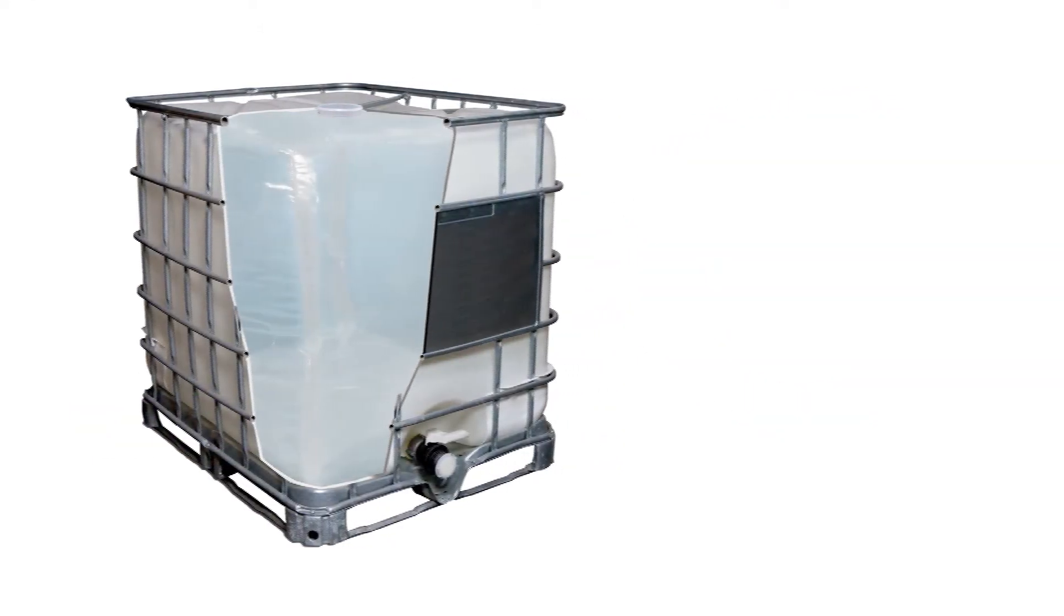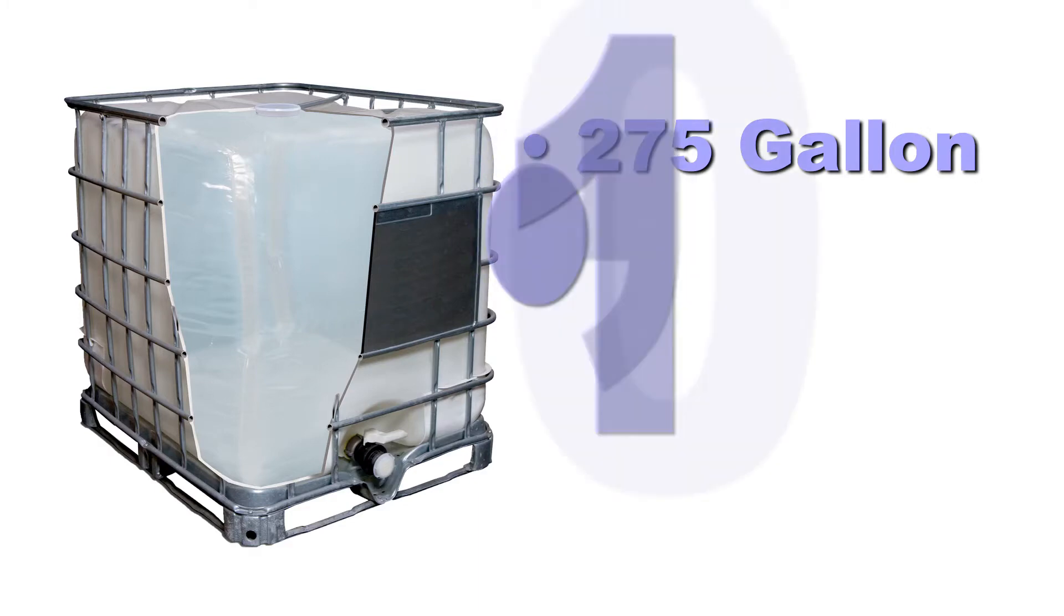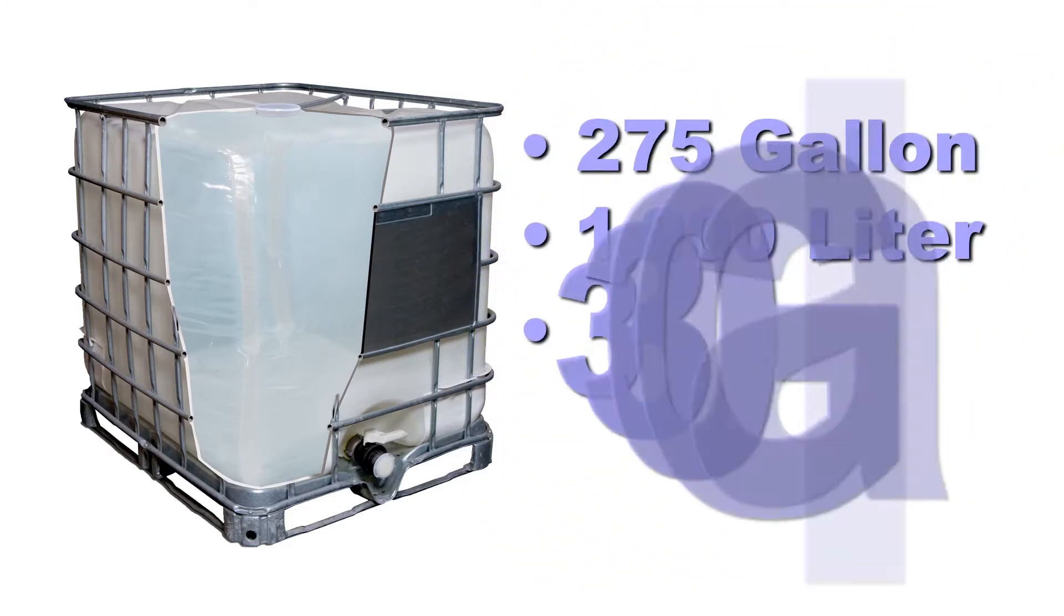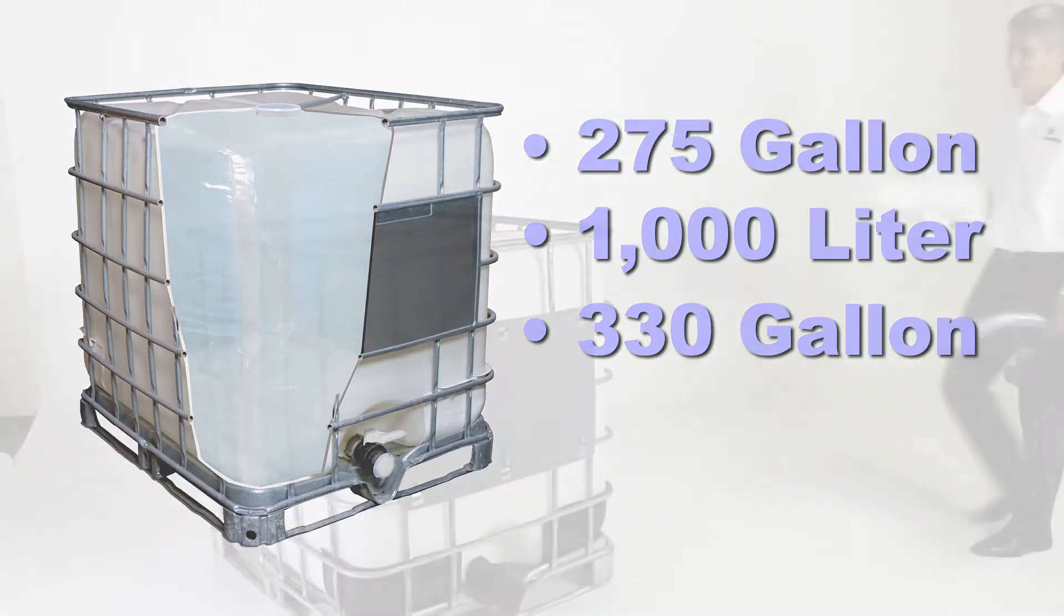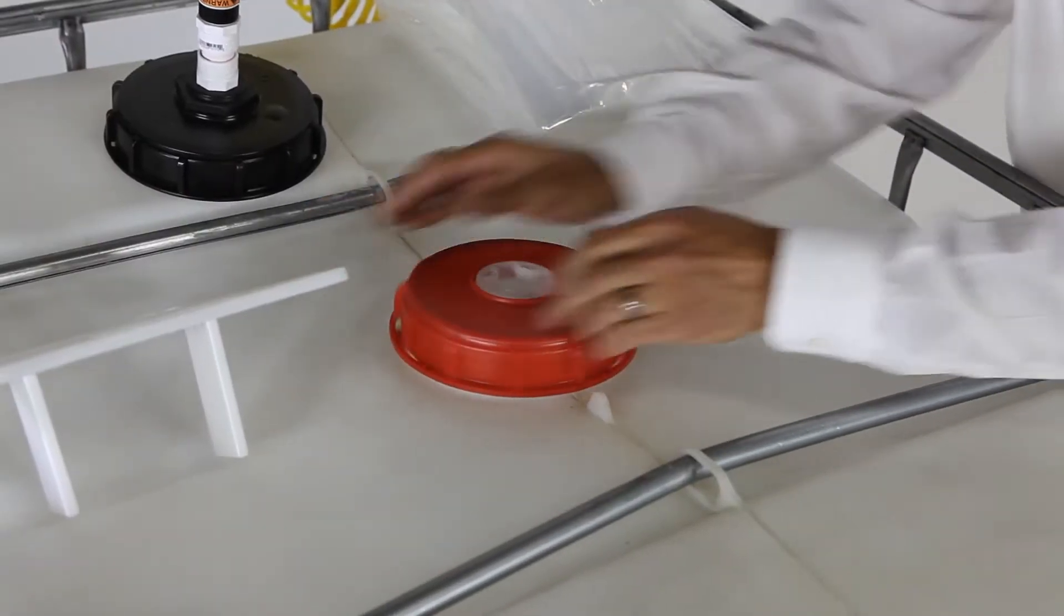This liner is designed to work with top dispensed containers in the 275-gallon, 1,000-liter, and 330-gallon capacities. To install the top dispensed liner, remove the top cap.